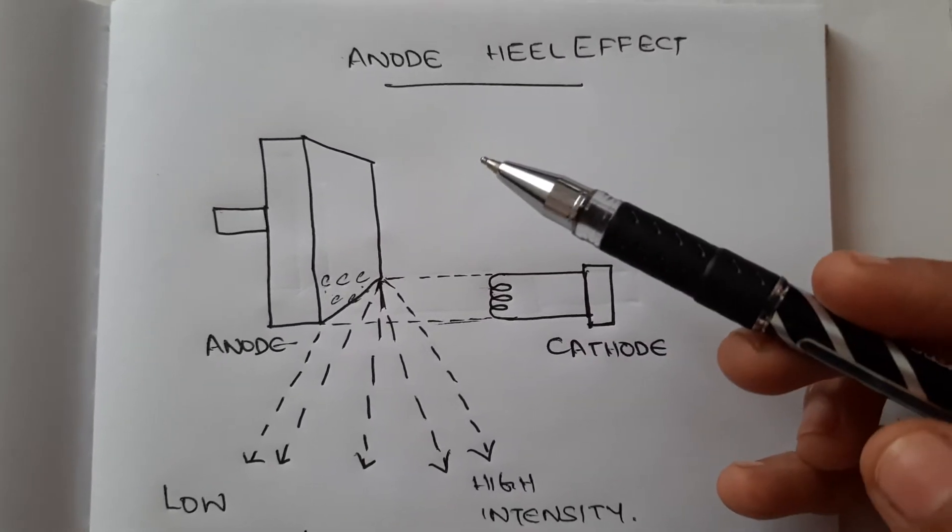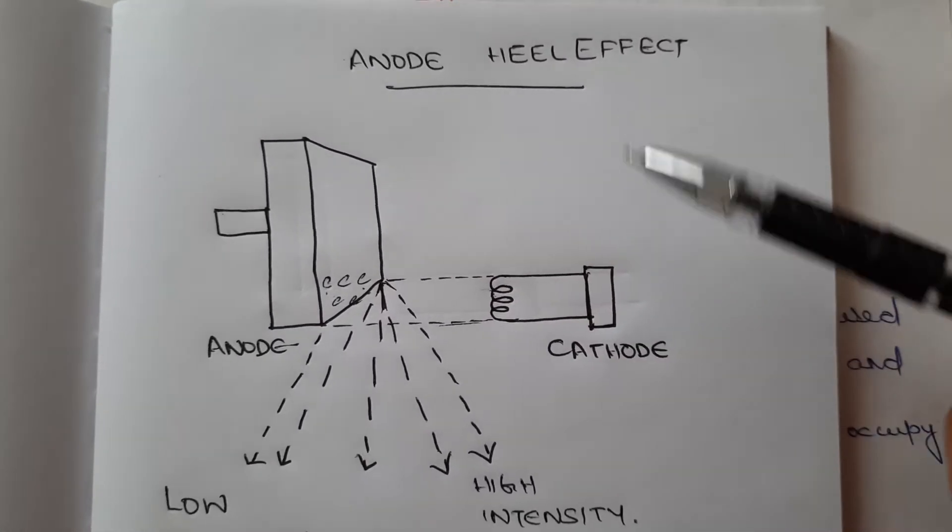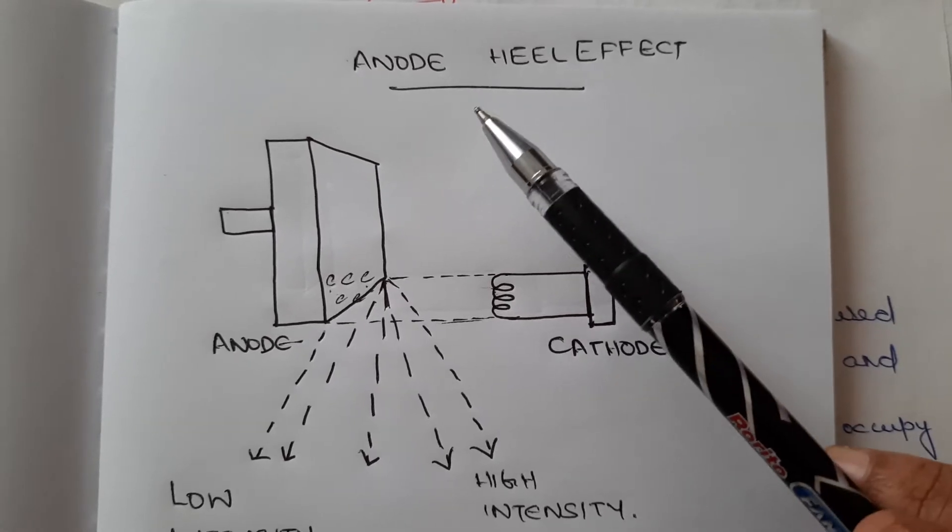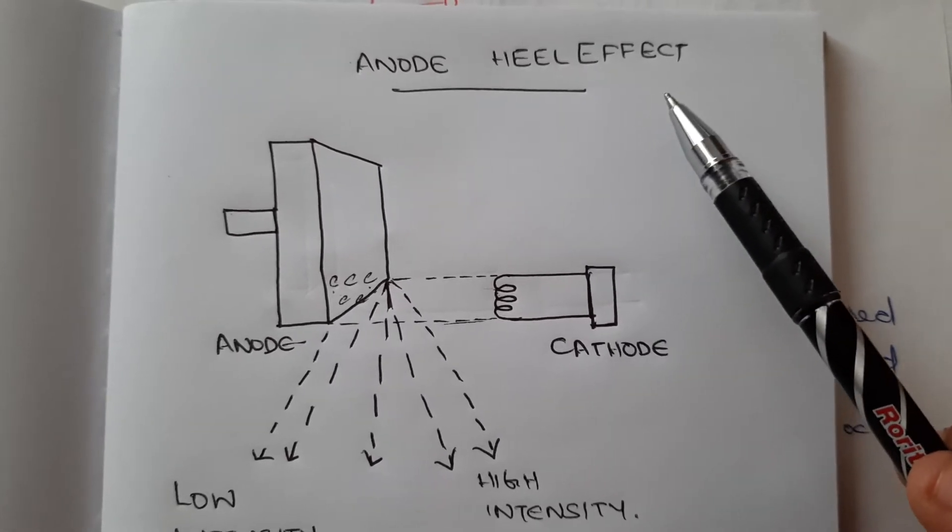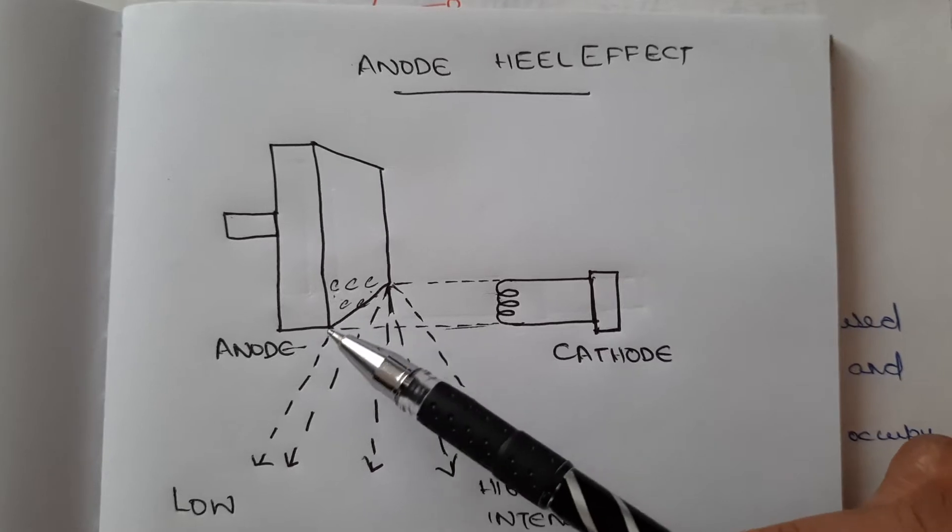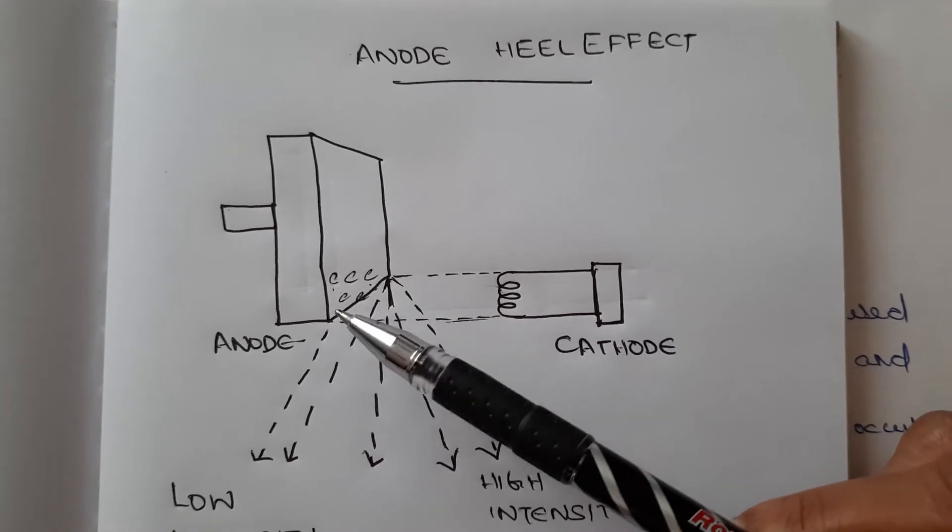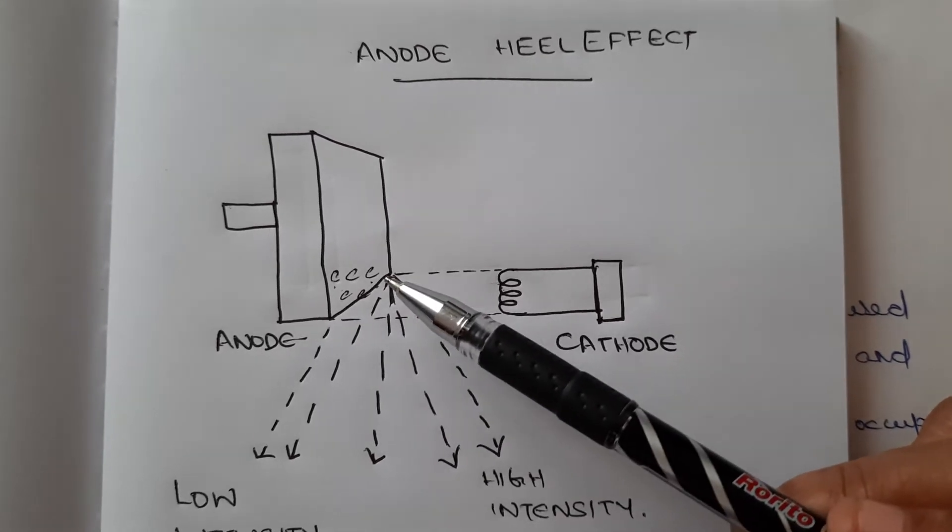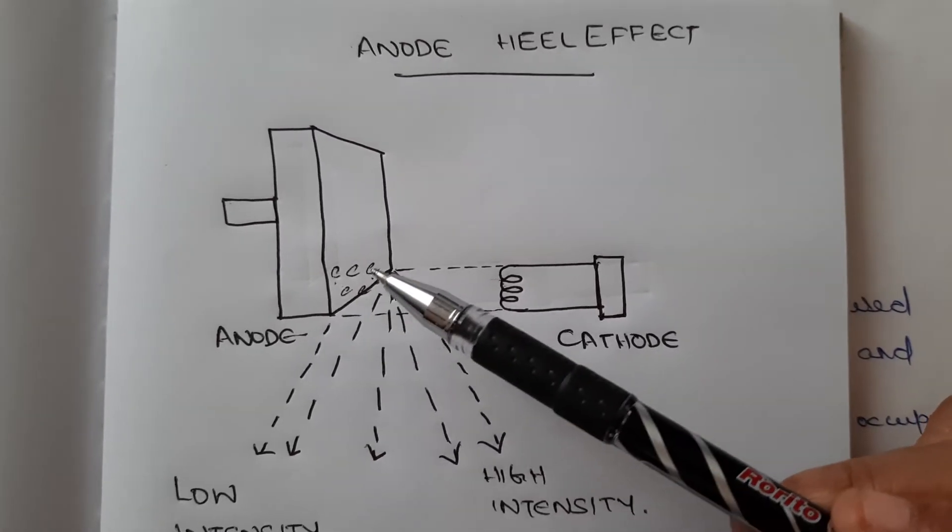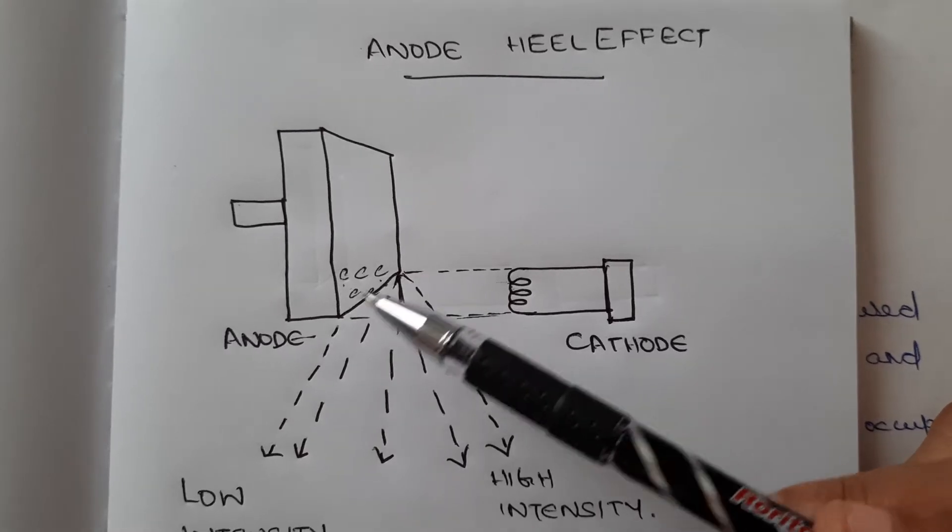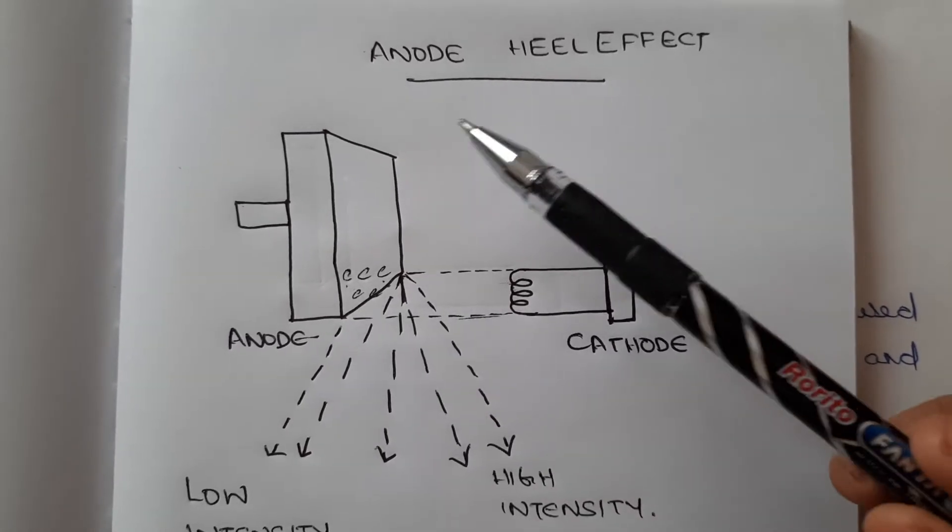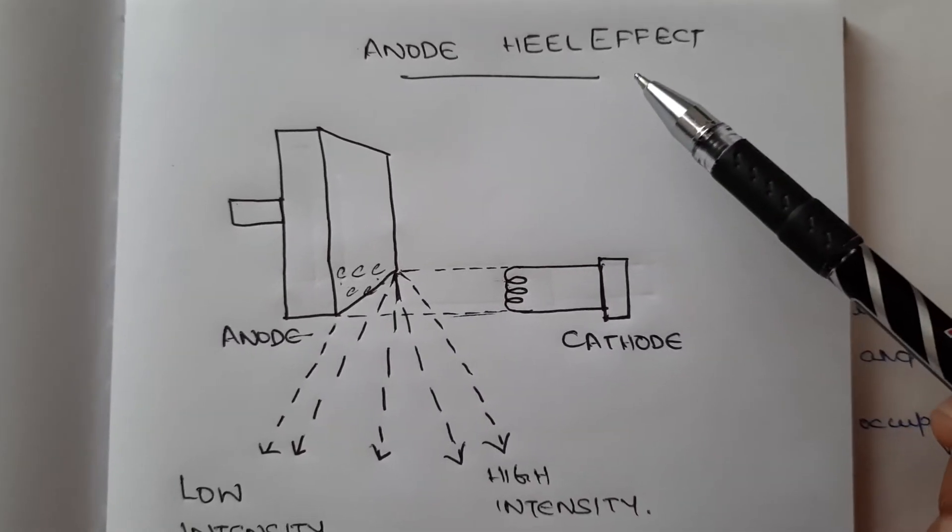Hello everyone, welcome to the video. Today we're going to discuss a small topic: the anode heel effect. We learned in previous videos that the anode or target is given a small angulation of about 15 to 20 degrees. This angulation produces an effect known as the anode heel effect.